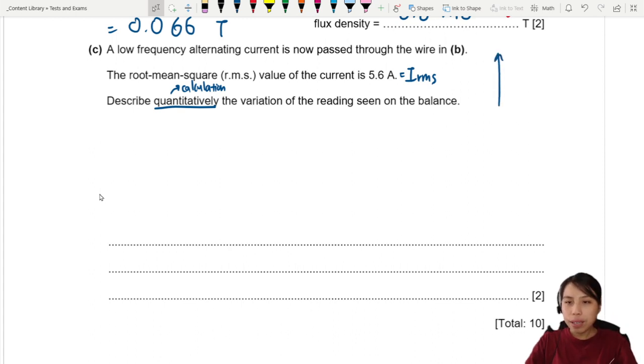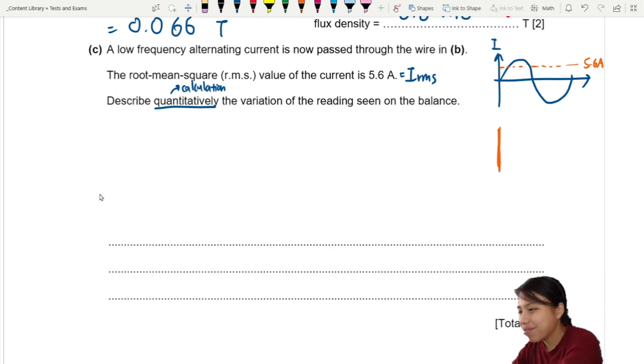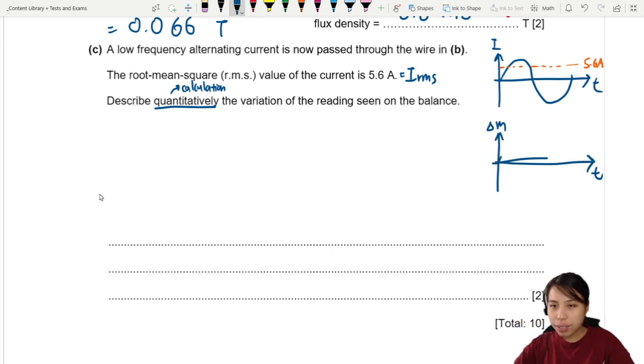Let's think about this RMS and what is happening first. So current alternating means you have something like this. RMS 5.6 means somewhere here, this value is 5.6 amps. Now, if I were to draw the mass reading, the change in mass reading. Let me just draw it. Ah, the color is being moody today.